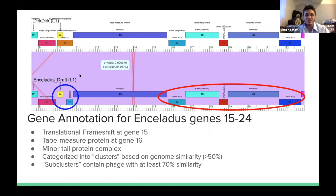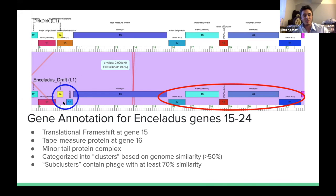We specifically looked at genes 15 through 24. On the left, genes 14 and 15 are circled in blue because, if you look at the top, genes 14 and 15 are different despite having very similar sequences and being part of the same cluster. A cluster is when you have 50% similarity, and a subcluster is when you have 70% similarity. To the right of that is the tape measure protein — the long blue protein — and in the red box is the minor tail complex, which are all tail proteins located next to each other.